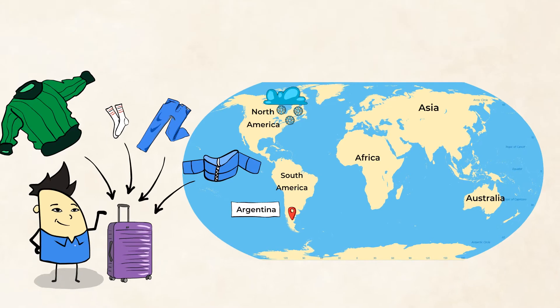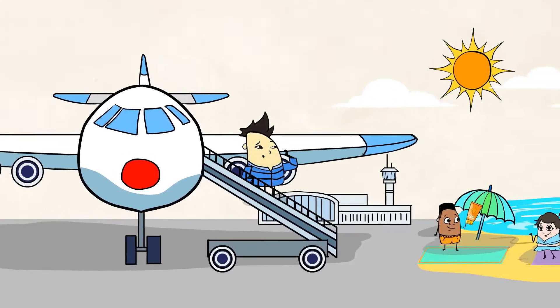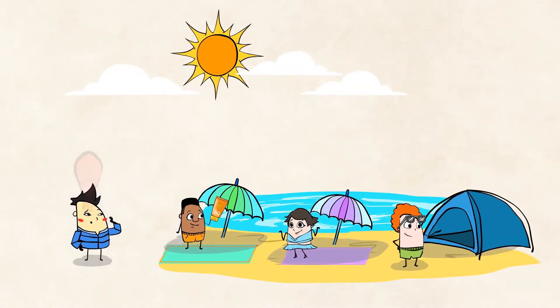And voila! He's ready to go. But check out what happens when Chen lands in Argentina. Yikes! He isn't dressed for this weather. It looks like the temperature here in January is very different from the weather back home in January.